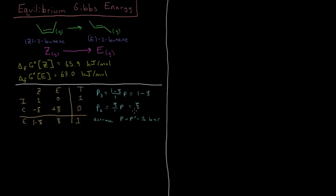That gives us our equilibrium constant KP equal to PE over PZ, which is ξ over 1 minus ξ. Instead of looking at this in terms of the standard Gibbs energy of reaction, let's take a different route and look at it explicitly in terms of the Gibbs energy of the products and reactants and see what happens when we take that value.